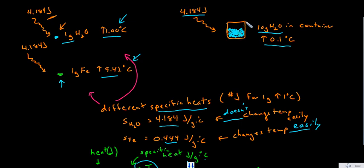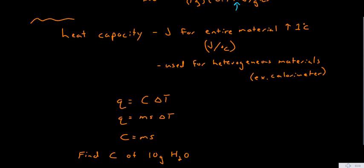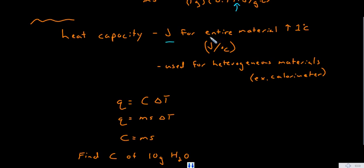So we know this is specifically water in here, but we can use this and the container within or enclosing it to describe heat capacity. So heat capacity is the number of joules for an entire material, i.e. all 10 grams of substance, to increase by 1 degree Celsius. It's joules per degree Celsius.